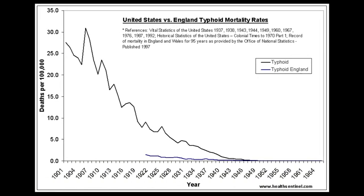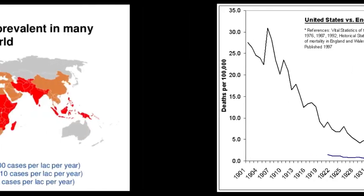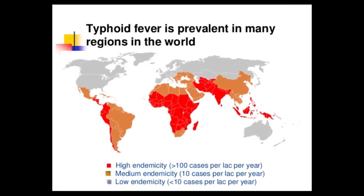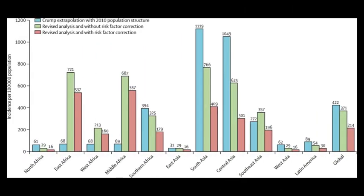The incidence of typhoid fever in the United States has decreased since the early 1900s. Today, in the United States fewer than 400 cases are reported, and these cases are mostly in people who have recently traveled to Mexico and South America. Whereas India, Pakistan, and Egypt are known as high-risk areas for this disease. Typhoid fever affects more than 21 million people annually, with about 200,000 people dying from the disease worldwide.